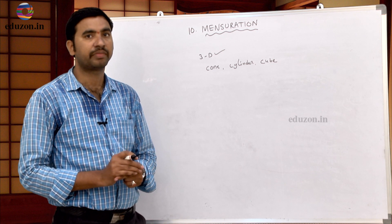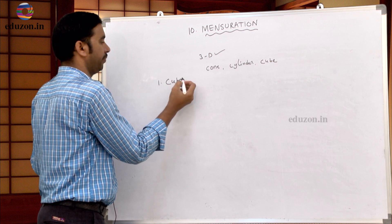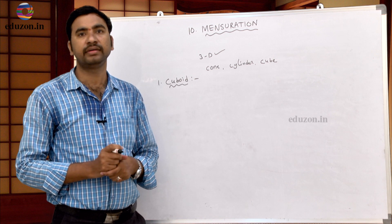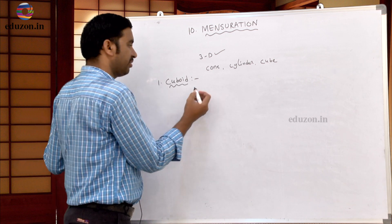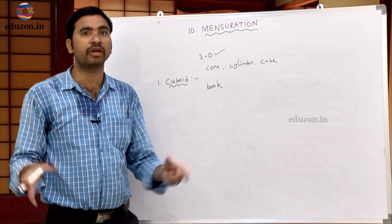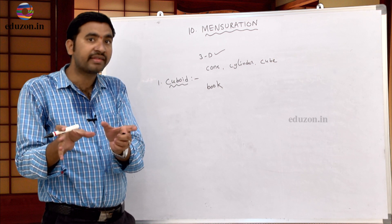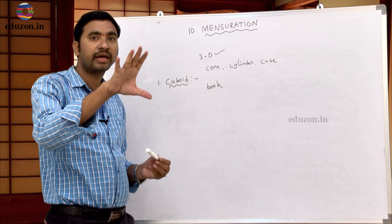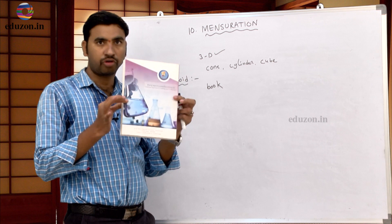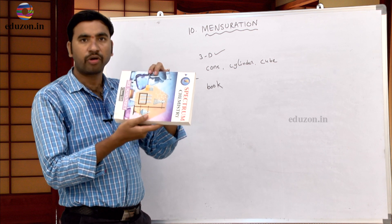Let us discuss first the cuboid. So what is a cuboid? Can you give any example for cuboid? Yes — a book is an example for cuboid, or we can take this room as an example. Cuboid means nothing but all the faces are in rectangle shape. Here I am showing a 3D figure — cuboid. This is the best example for cuboid. A book is an example for cuboid.